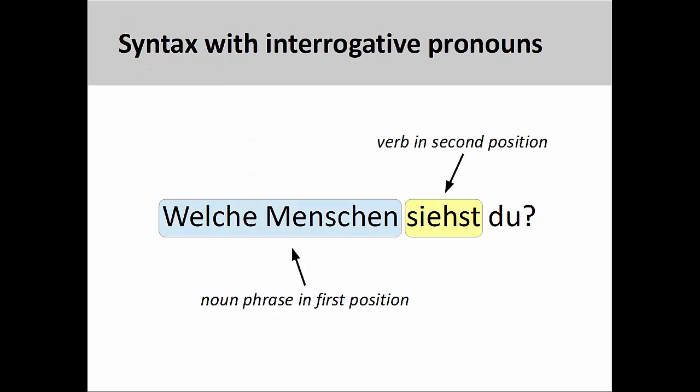Finally, it is important to remember that interrogative words always come in the first position of the sentence. Although 'welch' is generally used in conjunction with a noun, this noun phrase is still considered to be one unit and in the first position. The verb, of course, still comes in the second position.